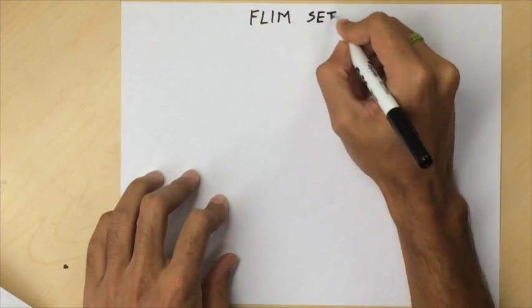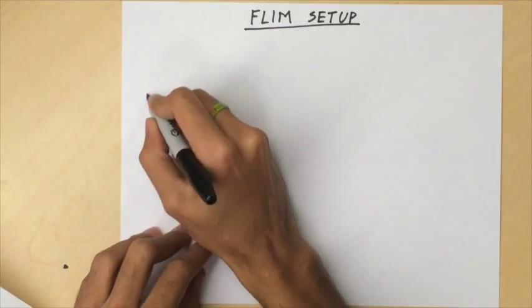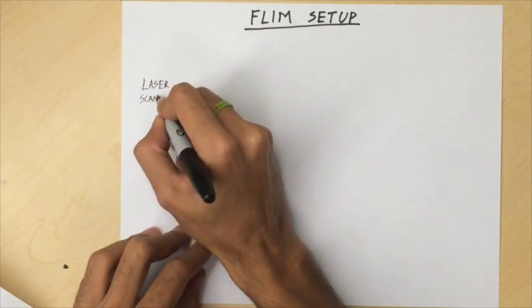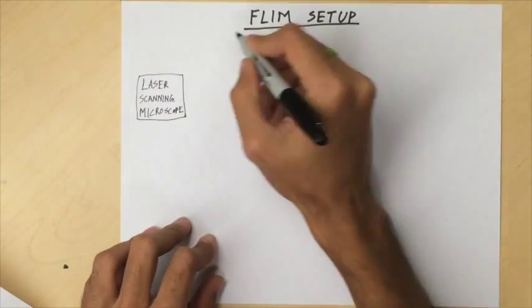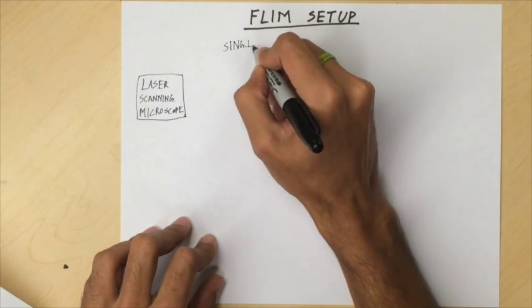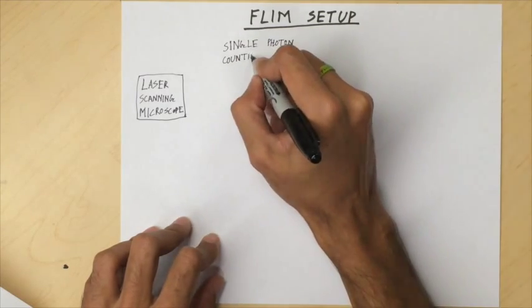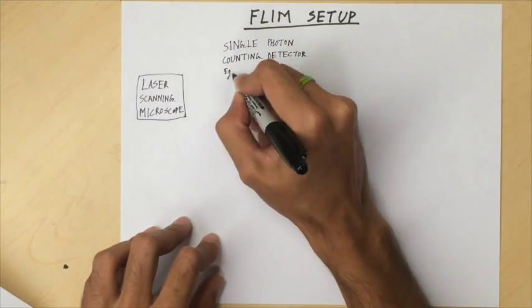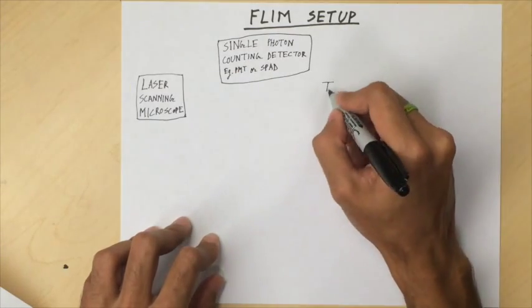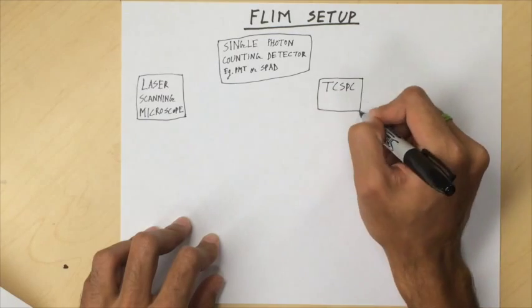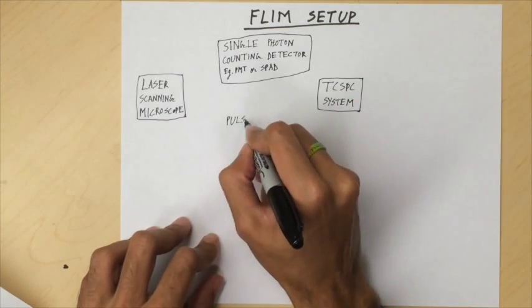A fluorescence lifetime imaging setup or FLIM setup typically consists of a pulsed laser system illuminating a sample on a laser scanning microscope which sends the fluorescence photons to a single photon counting detector. A time-correlated single photon counting or TCSPC unit, also known as a very expensive stopwatch, is connected and synchronized with all these other units.